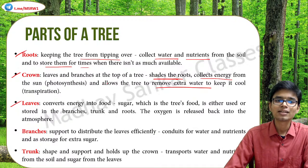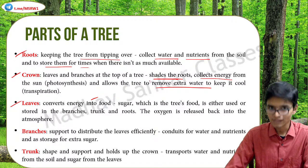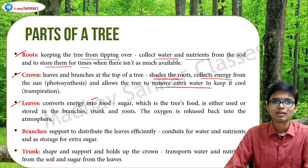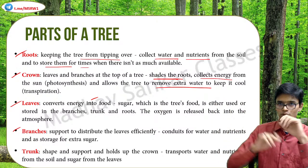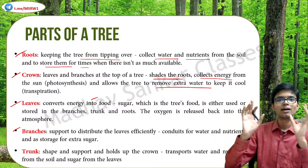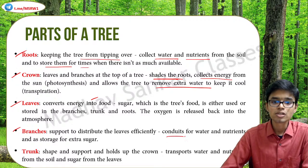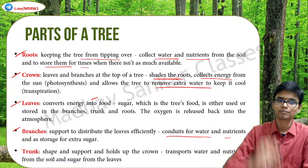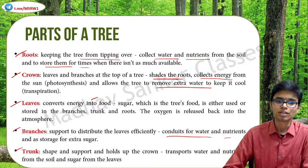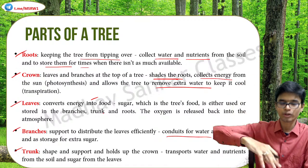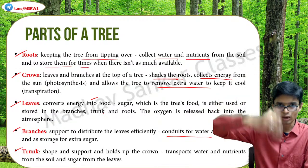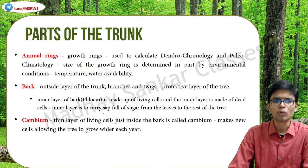Leaves are basically the manufacturing units of plants - they convert energy into food which is either stored in the leaves or transported to branches, trunks, or roots, and after photosynthesis oxygen is released back into the atmosphere. Branches are for the efficient distribution of the leaves so they can maximize absorption of sunlight, and also serve as conduits for water and nutrients between parts of the tree. The trunk provides shape and support to the tree, transports water and nutrients from the soil to upper parts, and transports food from upper parts down to the roots.